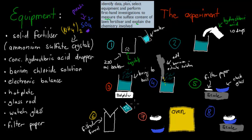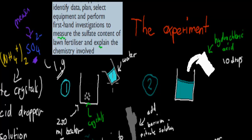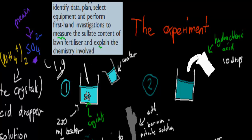The experiment has different steps. First, you measure out your solid fertilizer — roughly one gram of ammonium sulfate — using the balance. Then put that solid fertilizer into a 250 ml beaker. After that, add water and stir with a glass rod to make sure it dissolves. So now we've got a solution — the crystals have been dissolved.